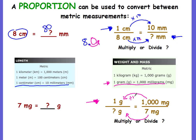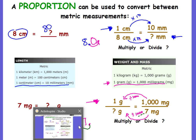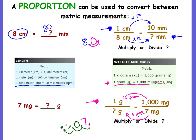We're going from the known — seven milligrams — to the unknown, so we go from 1,000 to 1. We're getting smaller, which means we're dividing by 1,000. So we take seven and divide it by 1,000 by sliding the decimal point. There are three zeros in 1,000, so we move the decimal three places to the left, fill the two holes with zeros. Seven milligrams is equivalent to 0.007 grams.